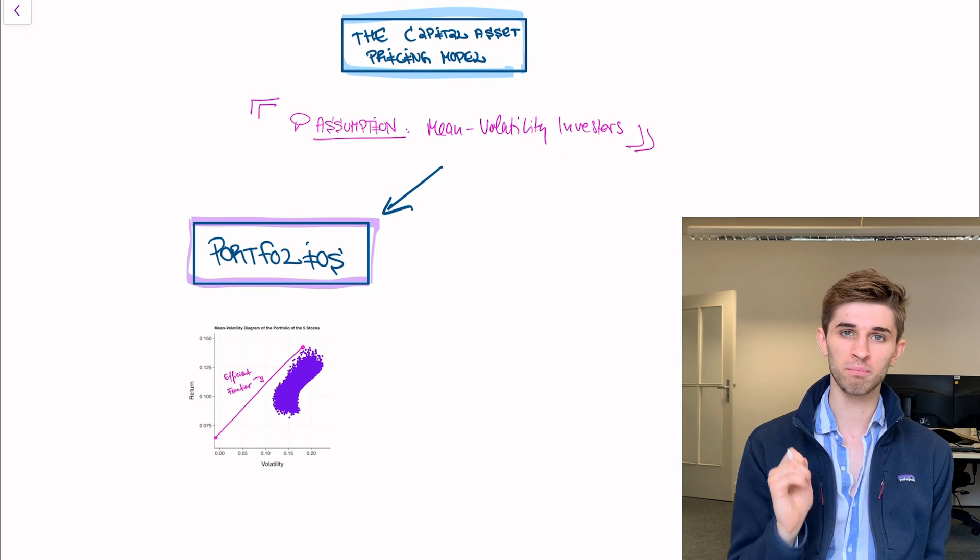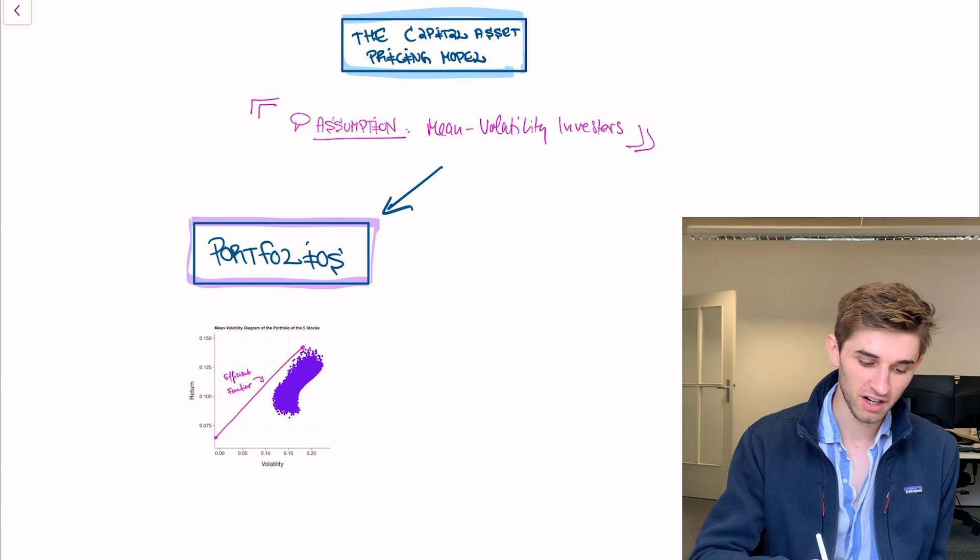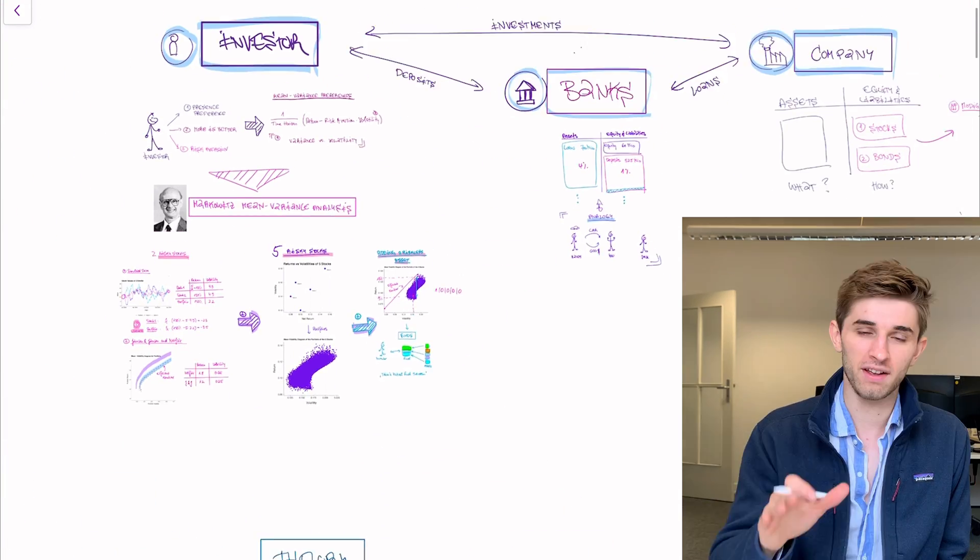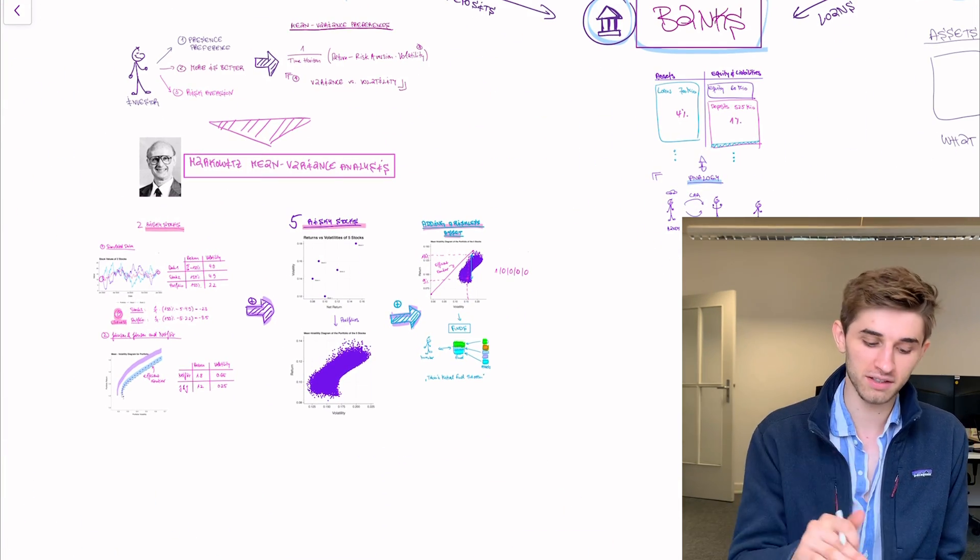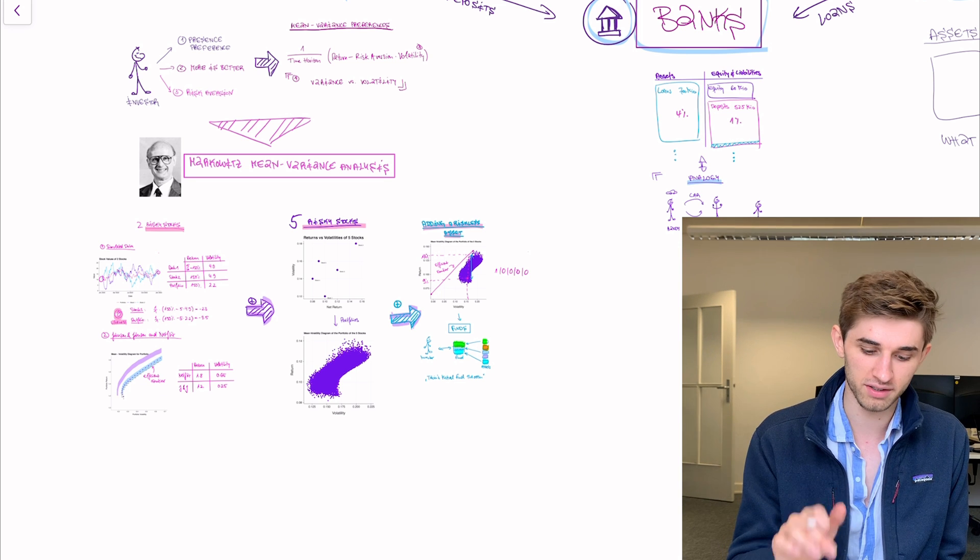Remember what we did on the chapters on Markowitz mean variance analysis. It was these chapters. If you don't know what I'm talking about, go to lessons four and five, where I talked about this in detail.